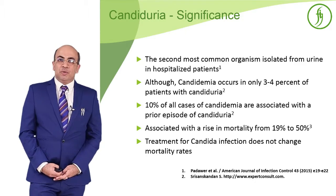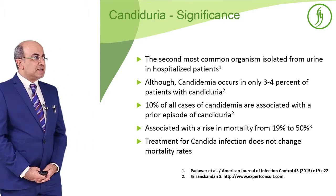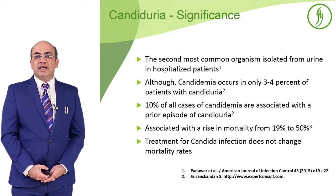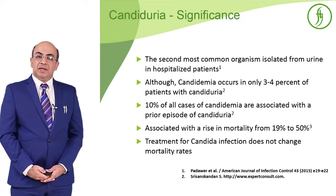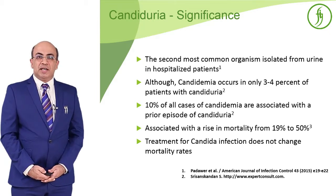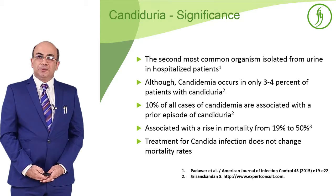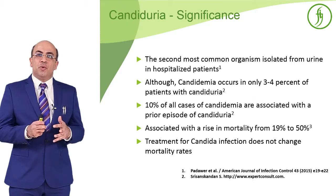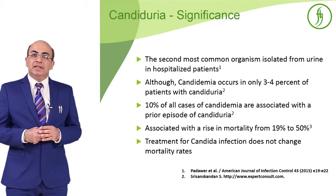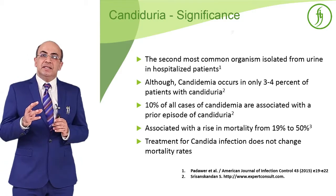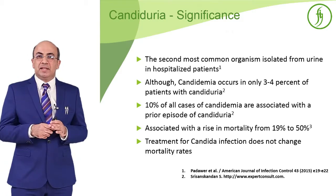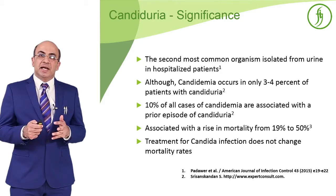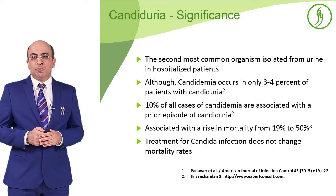Although candidemia occurs in only about 3 to 4% of cases, 10% of all candidemias have had a prior candiduria. Candiduria is associated with a rise in mortality of nearly 19 to 50%, but treatment of candiduria has not been shown to alter this mortality. This suggests that the presence of candida reflects underlying immune depression, which is why response to treatment remains poor.